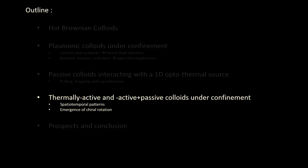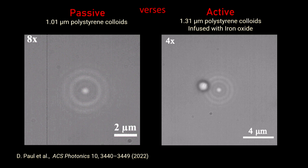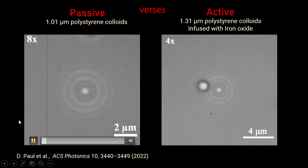Now I'll discuss what happens when you use thermally active colloids instead of conventional ones. The question is how thermally active colloids evolve in structured optical potentials and how this evolution changes in active-passive mixtures. With a defocused laser trap trapping hot Brownian colloids on a 2D platform and imaging at fast temporal scales, a conventional passive colloid in the defocused trap shows a beautiful hexagonal symmetry emerging.